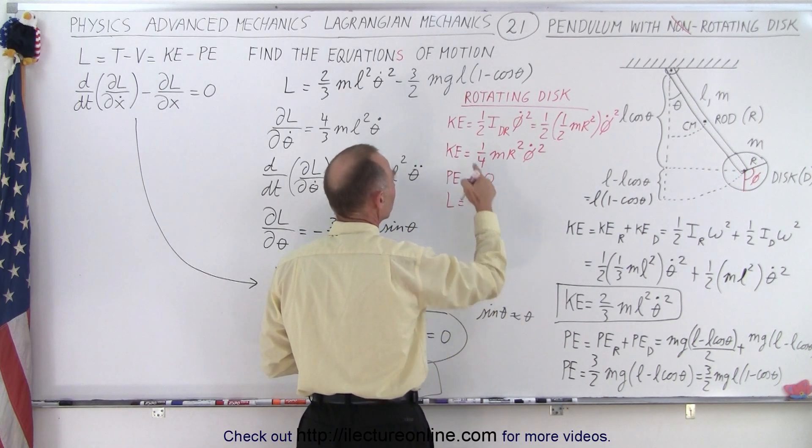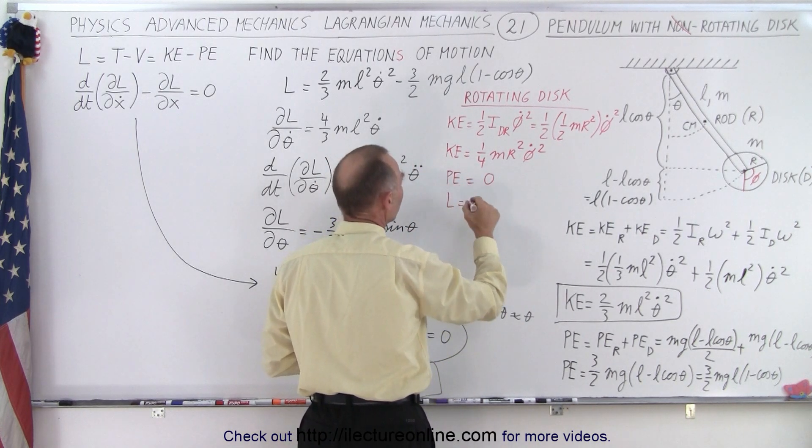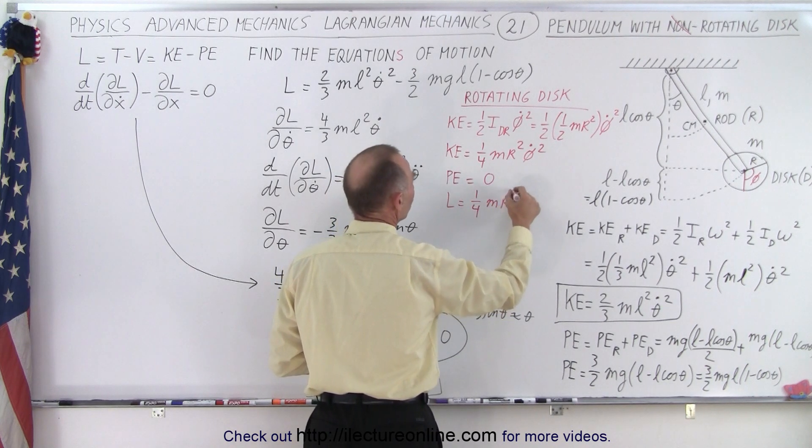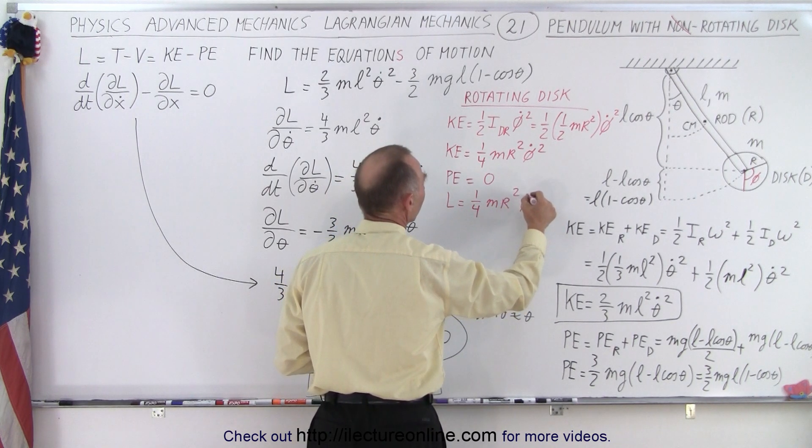And therefore, the Lagrangian is simply going to be the kinetic energy minus the potential energy, which is one quarter m r squared phi dot squared.